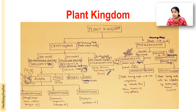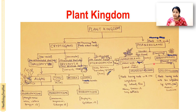Angiosperms have enclosed ovules. For example, mango — the pulp is there and inside is the seed, so the seeds are enclosed. Examples of angiosperms include mango — they are flowering plants. Angiosperms are again divided into monocotyledons and dicotyledons.